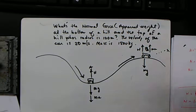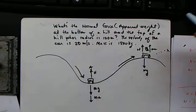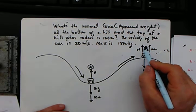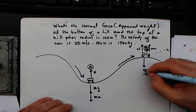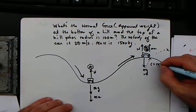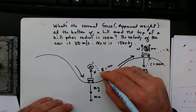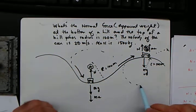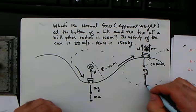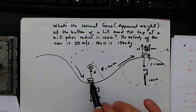The problem asks for the normal force, or apparent weight, at the bottom of a hill and at the top. We'll call the bottom position A and the top position B. The radius of the hill is 100 meters — if the hill were to make a full circle, it would have a 100-meter radius, so from the center to the surface is 100 meters.